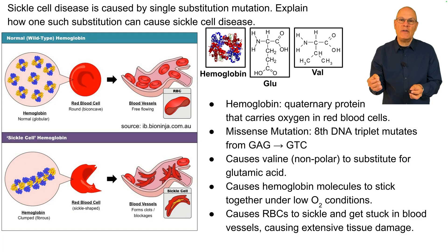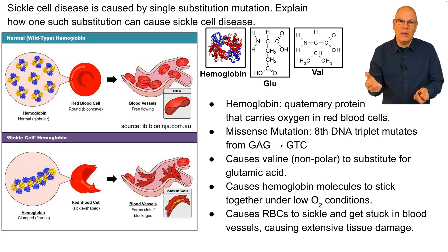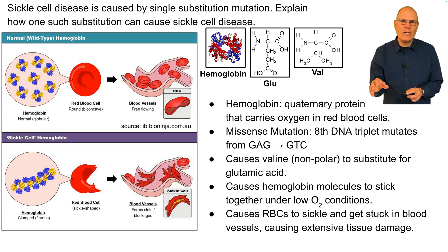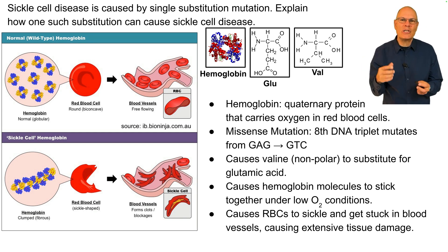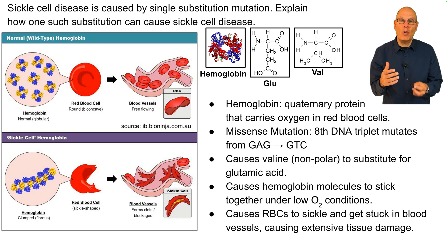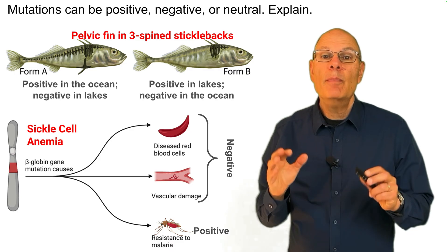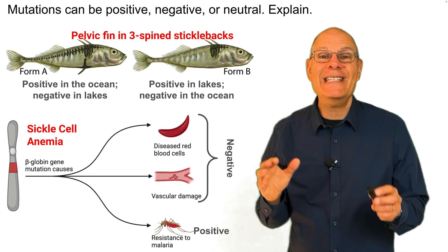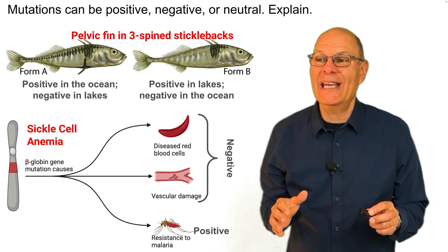This is a recessive mutation — you need to be homozygous to express the phenotype. There is a phenotype caused by being a heterozygote, called sickle cell trait. This is how a single substitution mutation can be responsible for a significant genetic disease. Mutations can be positive, negative, or neutral — explain.